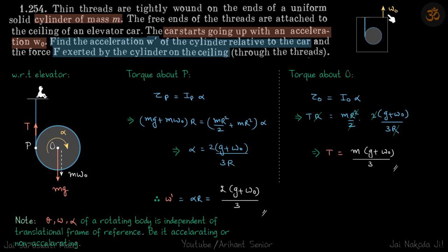We have this assembly inside an elevator and the elevator is going up with an acceleration of W naught. We need to find acceleration W dash of the cylinder related to the car and F exerted by the cylinder on the ceiling. So because we need to find the acceleration with respect to the car, let's analyze the whole situation with respect to the elevator.